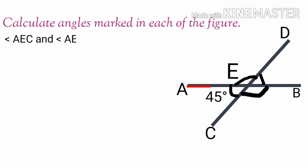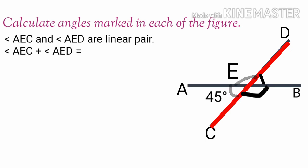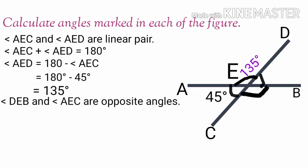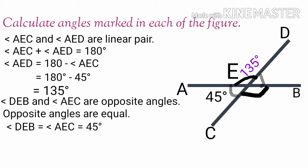Calculate angles marked in each of the figures. We have a linear pair of these angles. We know angle AEC and angle AED are a linear pair. Therefore angle AEC plus angle AED is equal to 180 degrees. Therefore angle AED is equal to 180 minus angle AEC. Angle AEC is equal to 135 degrees.